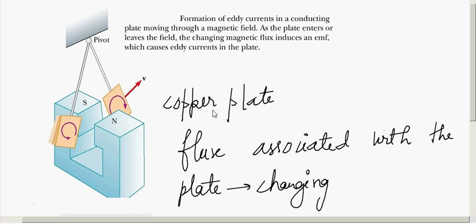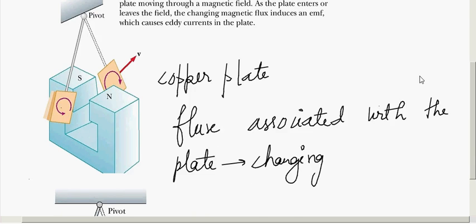This change in flux induces eddy currents, as shown in the figure. According to Lenz's law, this eddy current always opposes the cause producing it. The direction of eddy current is to oppose the cause which is producing it. Here the cause is the swing of the plate, so the induced EMF opposes the motion of the plate into the region of the poles.